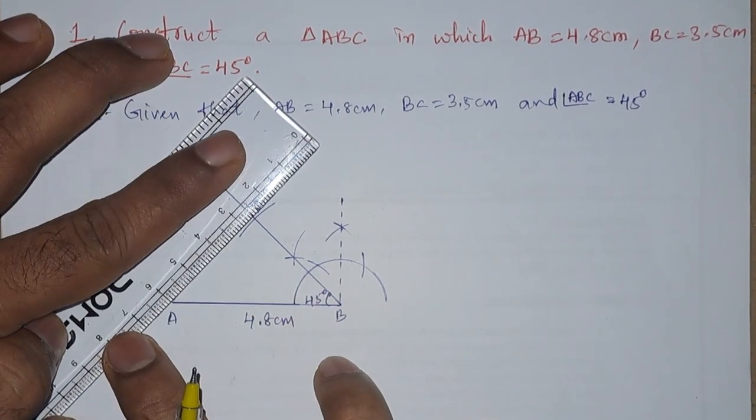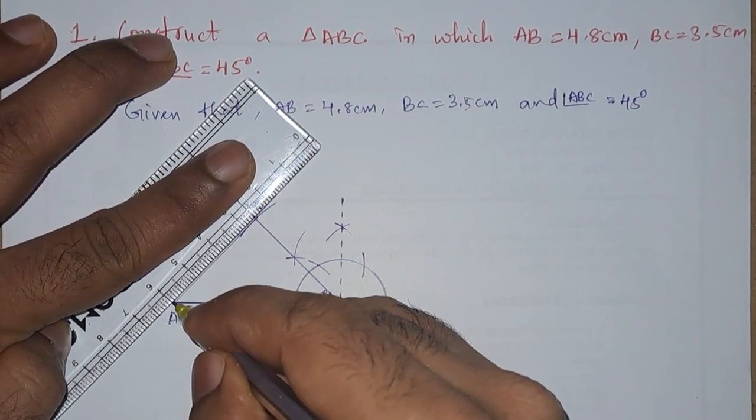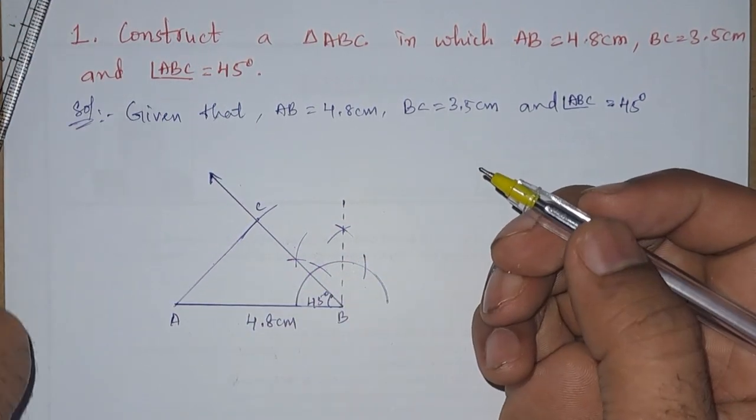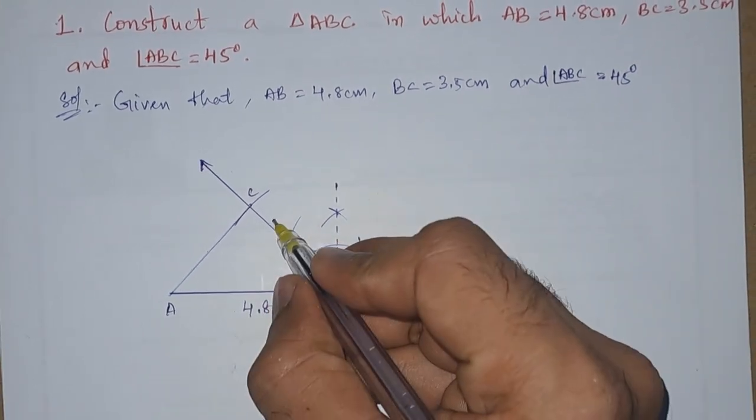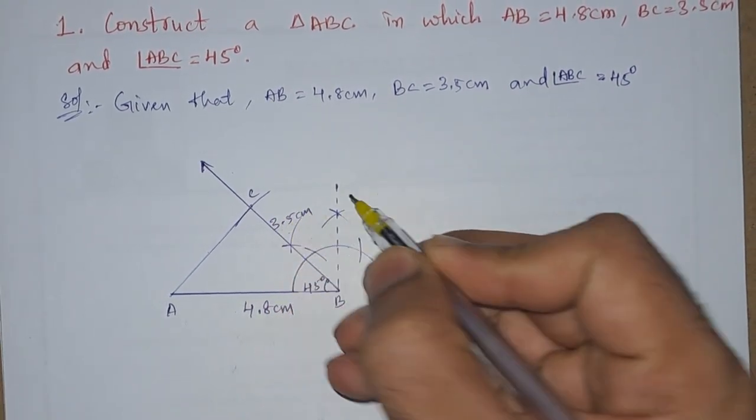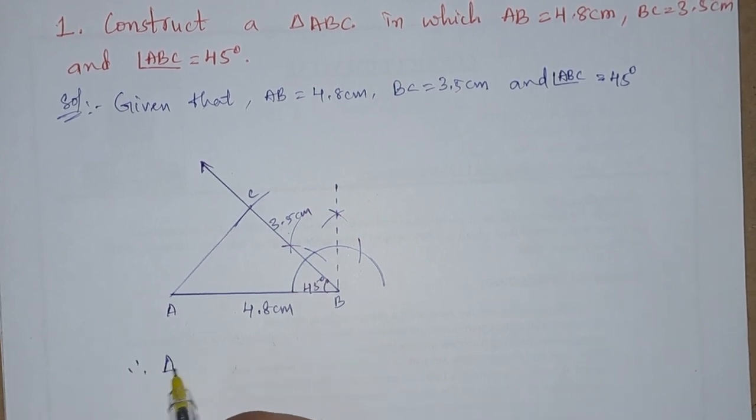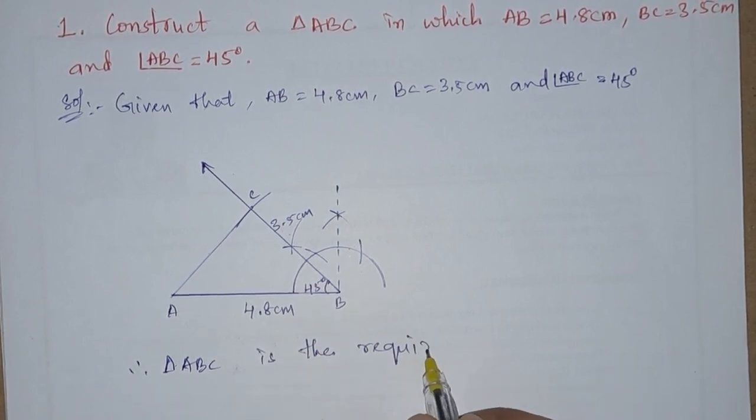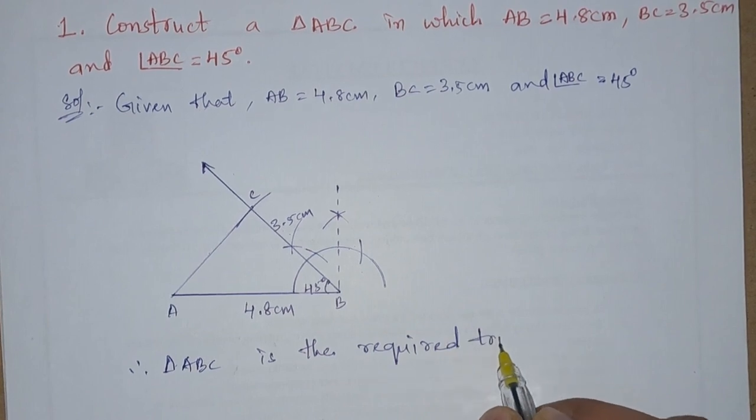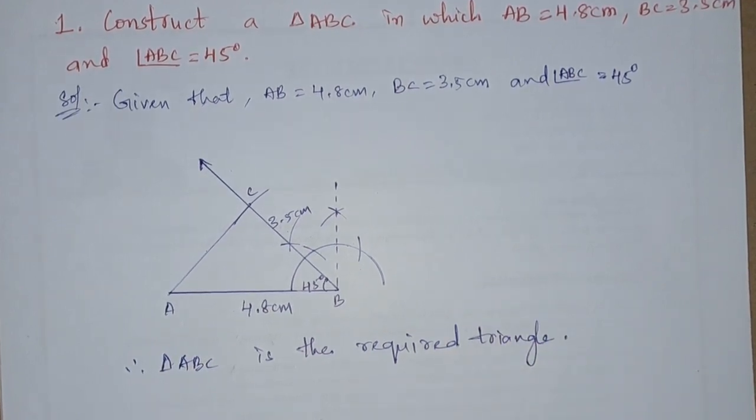Now we have to join A and C. Let us join A and C, so we got this required triangle. This is 3.5 centimeter. Therefore, triangle ABC is the required triangle. So this is the required triangle. This first problem is finished.